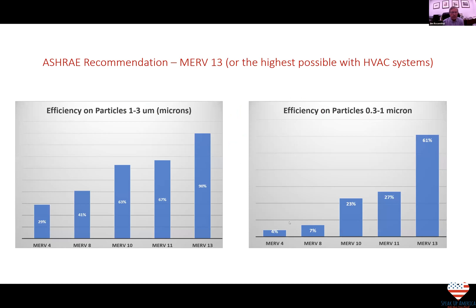ASHRAE's recommendation is for MERV 13 filters, or the highest possible compatible with HVAC systems. Looking at two charts — one showing efficiency on particles one to three microns, the other on particles 0.3 to one micron — MERV 13 filters in both categories are substantially better than other filters. That's why the recommendation is what it is.